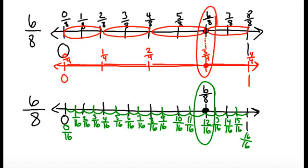So let's look at 6 eighths again, and I see 12 sixteenths. They're at the same point. So we can say 6 eighths is equivalent to 3 fourths and also equivalent to 12 sixteenths.